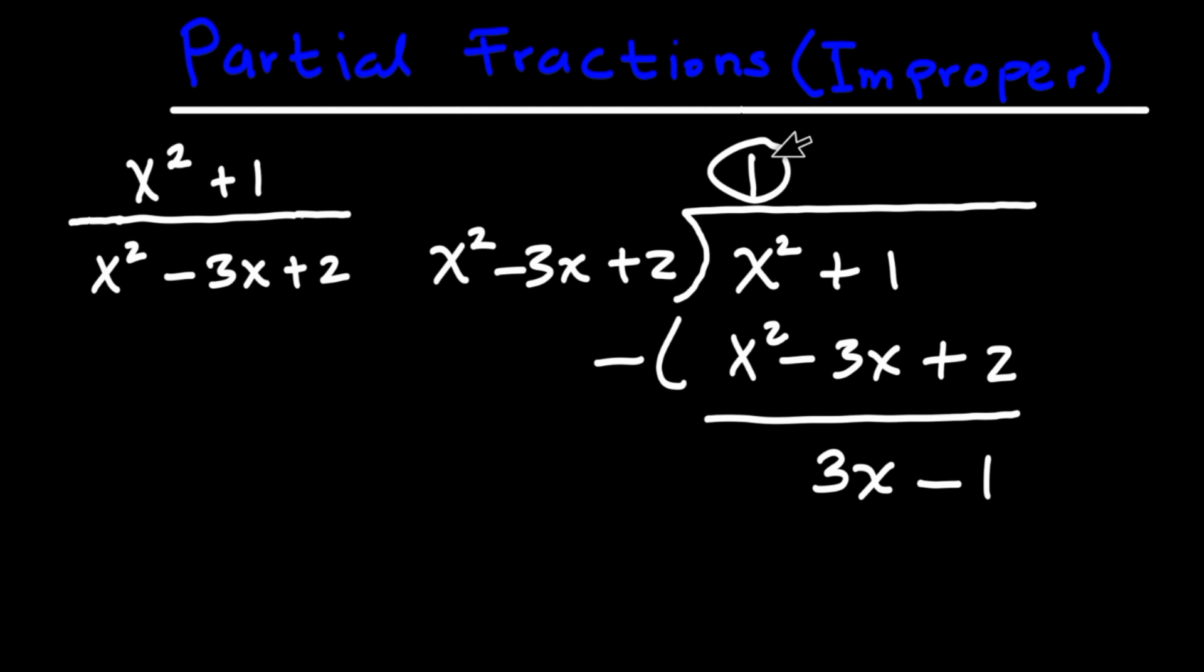So we have a quotient here. We can rewrite this in different form. So the problem now becomes x squared plus 1. Now you notice that here we have a quadratic factor. Whenever you have a situation like this, it is important to factorize. And in factoring this, we're going to have the whole thing to be x minus 1 times x minus 2.